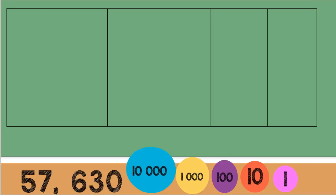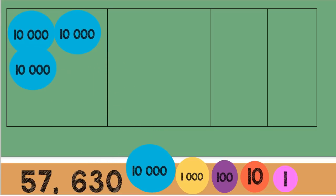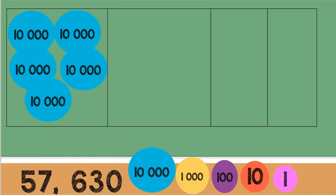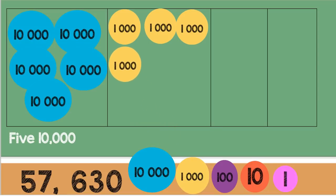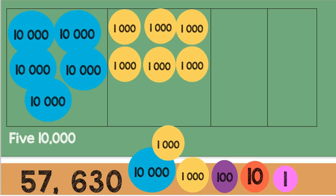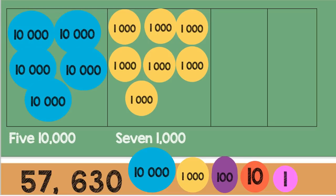57,630. Let's put 10,000, another 10,000, 10,000, 10,000, 10,000, and 10,000 — so we have 5 ten-thousands to make 50,000. Next, we have 1, 2, 3, 4, 5, 6, 7 — seven 1,000s to make 7,000.